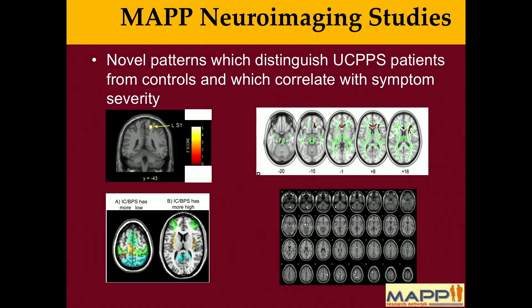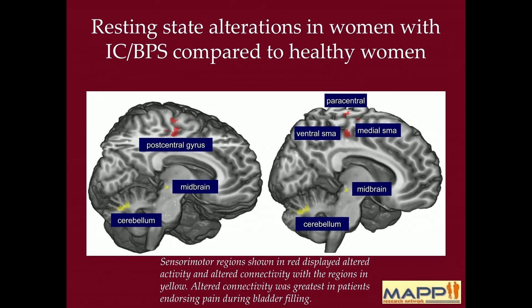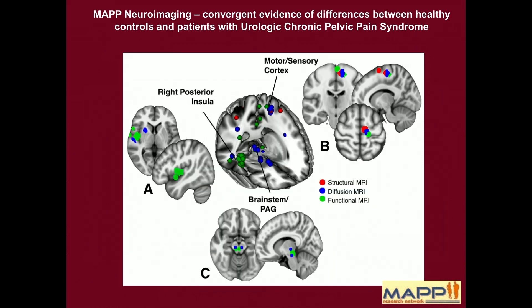What we see in the MAP network is that there are clear patterns of brain activation in UCPPS patients that differentiate them from controls, and this has been seen across the network — a really exciting finding. Beyond these differences in patterns, we know there are sensory motor regions shown in red that have altered connectivity with regions shown in yellow, and this is greatest in patients endorsing pain during bladder filling — so that fullness of the bladder can actually alter these brain connections. This is a summary of brain findings from structural MRI, diffusion MRI, and functional MRI.